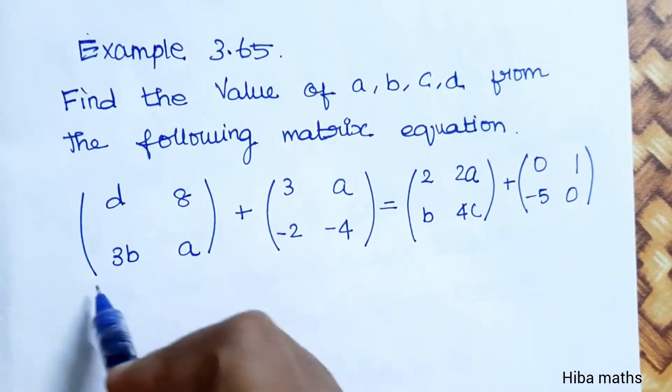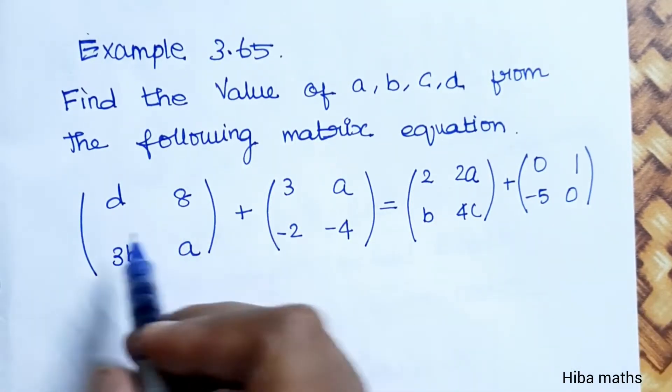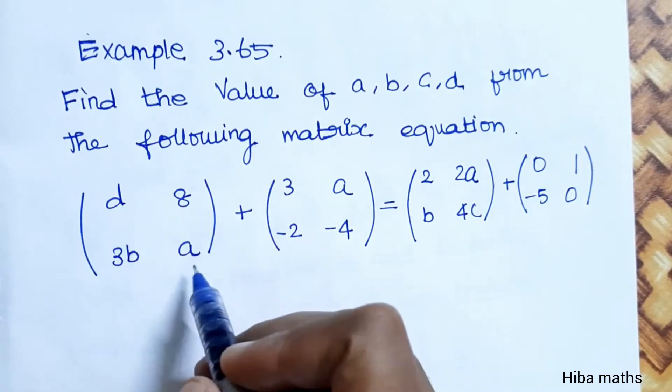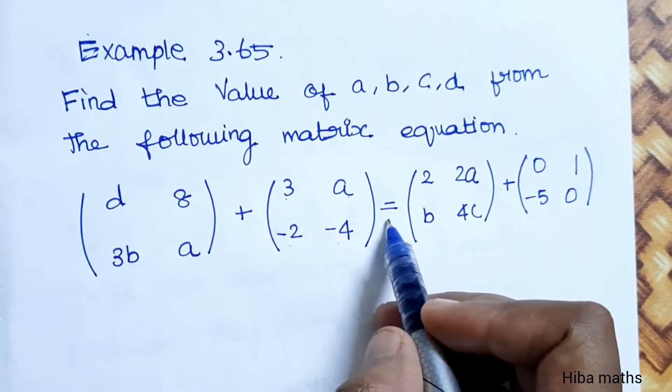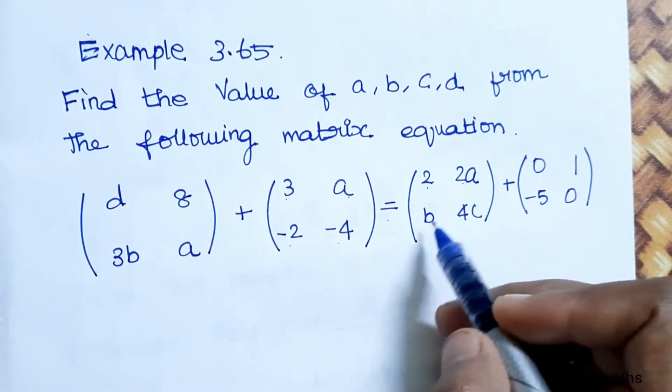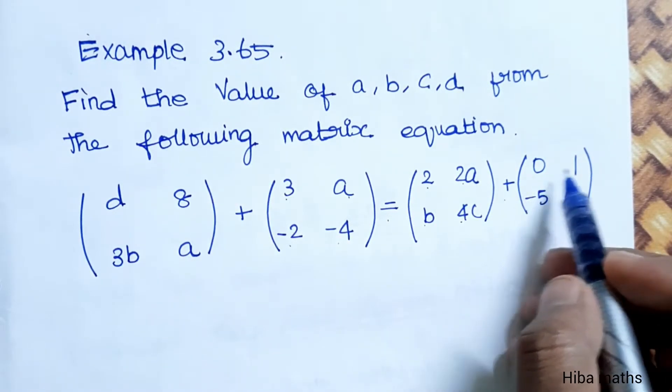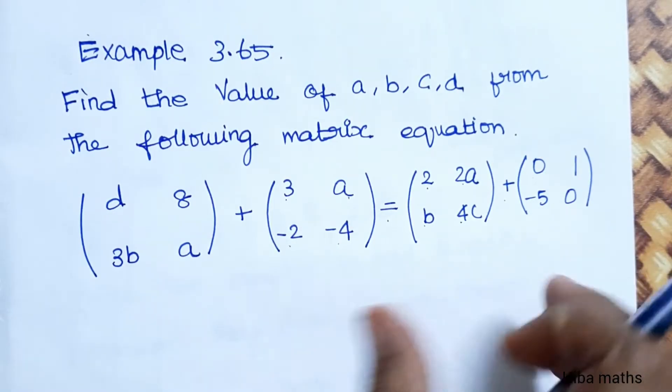Let us know the matrix equation. Matrix with elements D, 8, 3B, A plus matrix with 3, A, minus 2, minus 4 equals matrix with 2, 2A, B, 4C plus matrix with 0, 1, minus 5, 0.